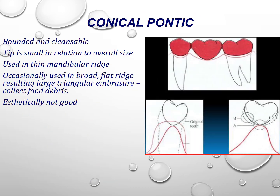The modified ridge lap pontic gives an illusion of a tooth. It possesses all or nearly all convex surfaces for easy cleaning, and the lingual surface has a deflective contact that prevents food impaction. You can see this in cross-section, frontal view, and lateral view. The conical pontic has a conical shape — only one tip contacts the ridge. It is rounded and cleansable, used for thin mandibular ridges and occasionally for broad flat ridges, but it results in large triangular embrasures that collect food debris, making it aesthetically poor.